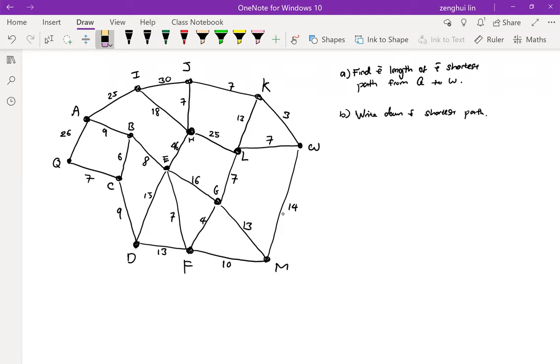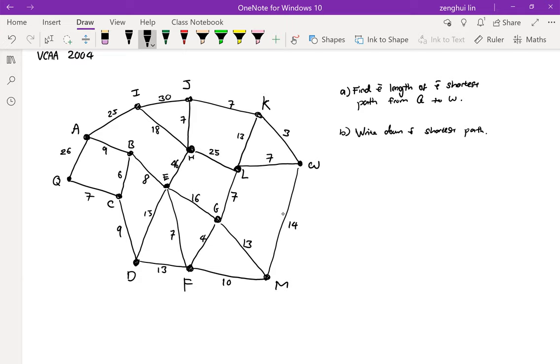So now I'll be doing the 2004 exam question for Dijkstra's algorithm. The question asks us to find the shortest path from Q to W here to here, and then to write down the sequence of the shortest path.